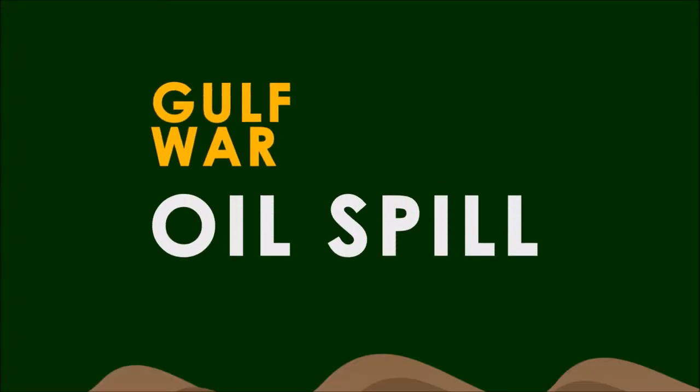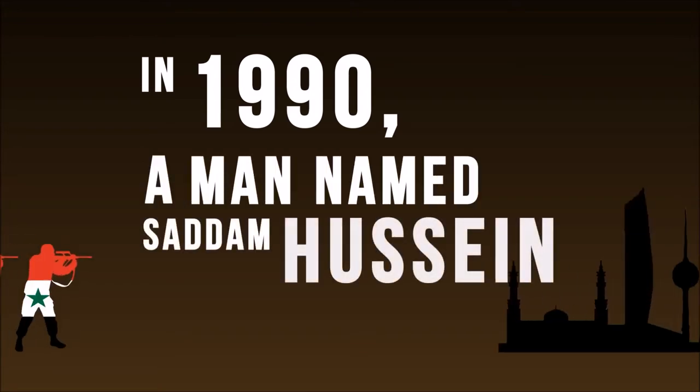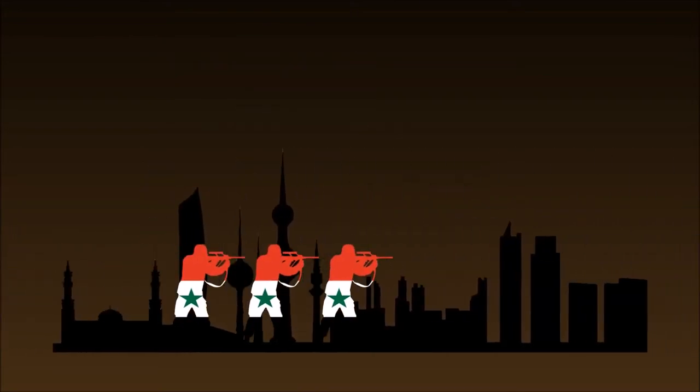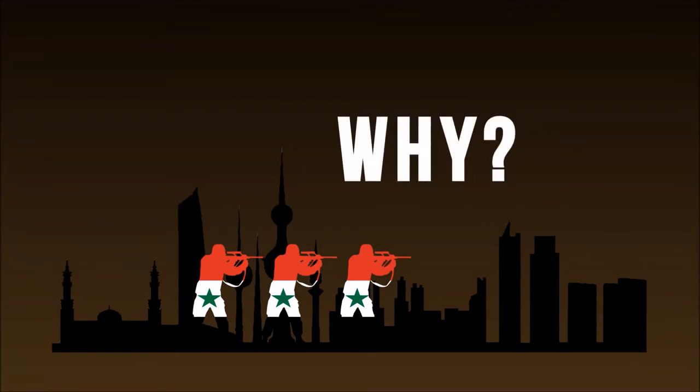This is the story of the Persian Gulf oil spill. In 1990, a man by the name of Saddam Hussein ordered the Iraqi invasion of Kuwait. Why? Let's take a closer look.